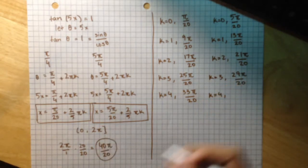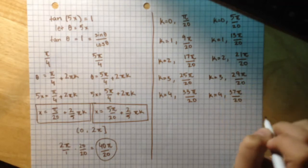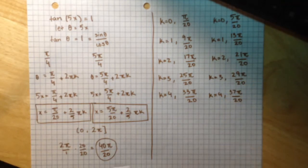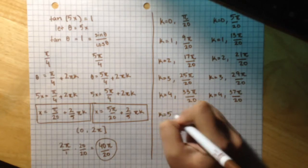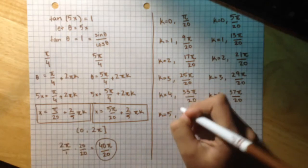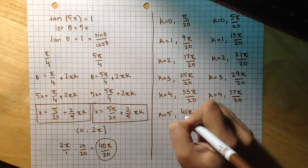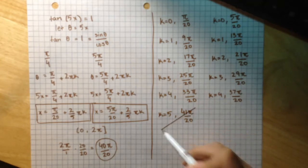We are pretty close to 40pi over 20, but let's just try one more, k equals 5. If we substitute 5 into this equation for k, we get 41pi over 20, which is above our limit. So we know that this is where we have to stop and we can't use this value.